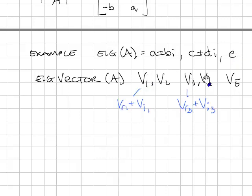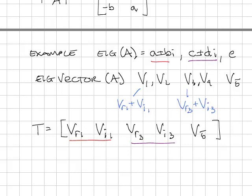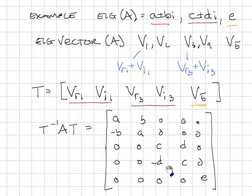Since V1 and V2 are complex conjugate pairs, we can write them as V_real1 ± V_imaginary1 · i, and similarly for V3 and V4. To create the similarity transformation matrix T: the first two columns use the real and imaginary components of the eigenvectors corresponding to A + Bi; the next two columns use the real and imaginary components corresponding to C ± Di; and the fifth column uses the real eigenvector corresponding to eigenvalue E. Computing T inverse AT gives a block diagonal matrix.